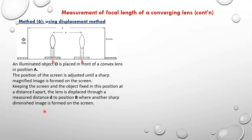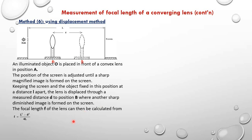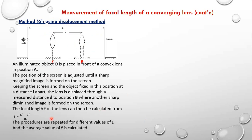That is the formula we derived earlier on, and it is what we shall use to get the focal length of the lens. For accuracy, we shall repeat the procedure with a different value of L, get the corresponding value of D and the new F. The focal length is then the average of the two values of F.